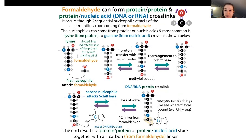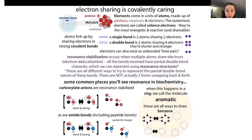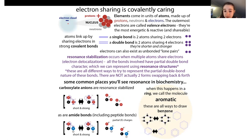Theoretically you could have the DNA or RNA acting as the first nucleophile - you're going to have two nucleophilic attacks - but typically the lysine attacks first because it's the most nucleophilic. One reason DNA is less likely to attack first is that the bases are resonance stabilized - there's communal electron sharing around those rings - and that makes those base nitrogens less nucleophilic than lysine, which doesn't have that.